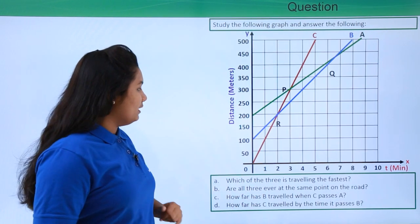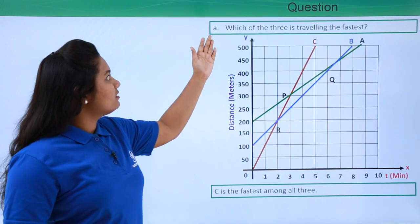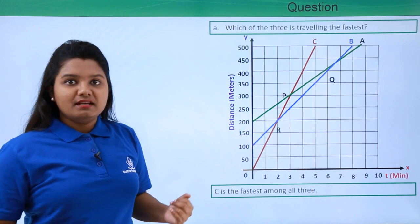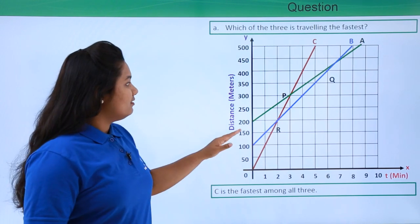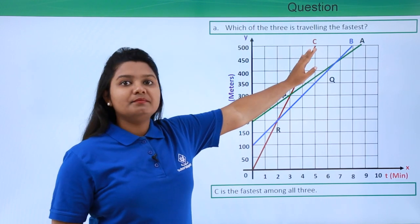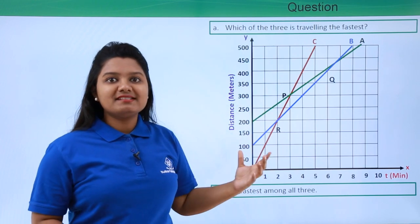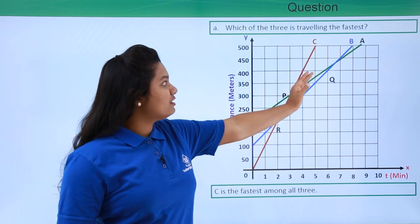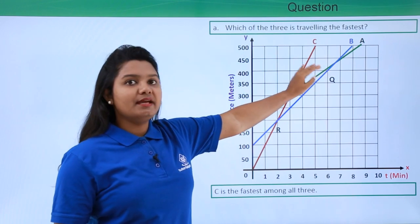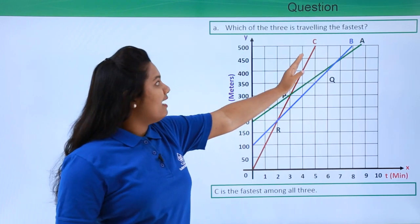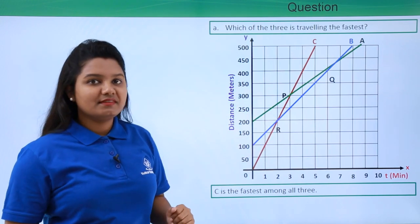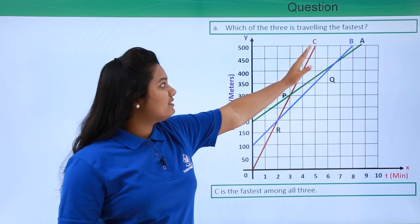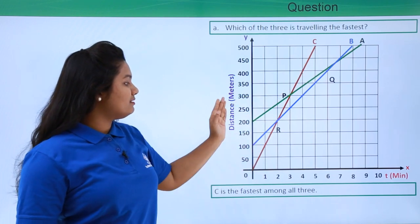The first question is: which of the three is traveling the fastest? We know that the steeper the distance-time graph of a body, the faster it is. So we need to figure out which among A, B, and C has the steepest distance-time graph. As you can clearly see, it is object C which has the steepest distance-time graph.